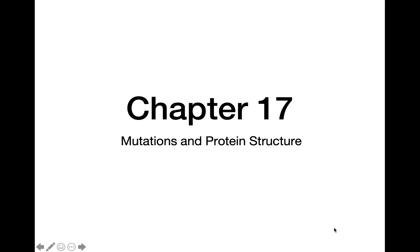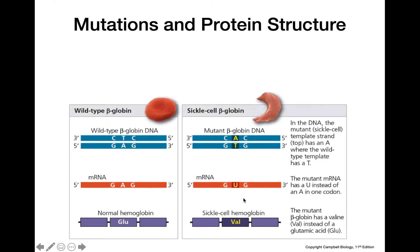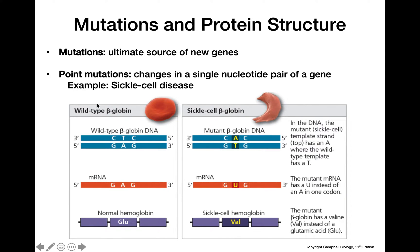This video is going to be about mutations and protein structure. Mutations are the ultimate source of new genes because they change the sequence of nucleotides in our DNA. An example of a kind of mutation is point mutations, which are a change in a single nucleotide pair within a gene.